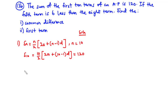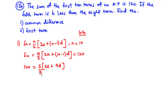Let's simplify. This becomes 120 equals 10 divided by 2 is 5, so 5 times (2A plus 9D). We divide through by 5: 120 divided by 5 is 24. So 24 equals 2A plus 9D. Let's call this equation 1.